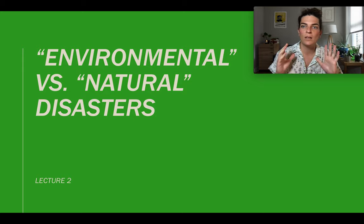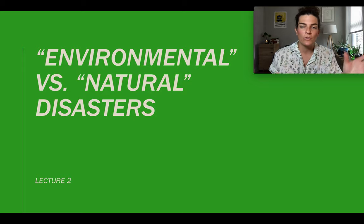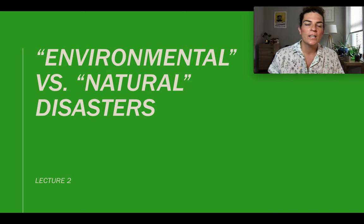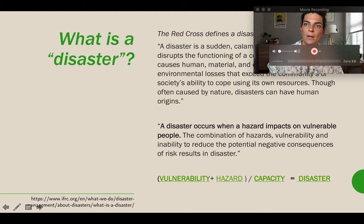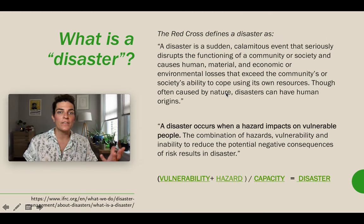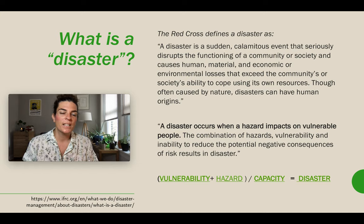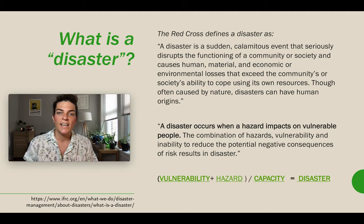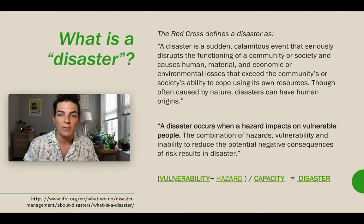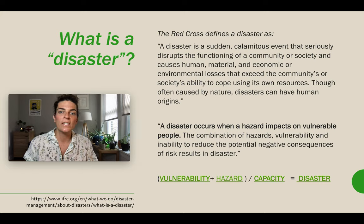This is still day one, but it's lecture two. Lecture one was: what is nature? Lecture two is: environmental versus natural disaster. Before we get to that, we have to start with the definition of a disaster. A disaster is defined by the Red Cross as a sudden calamitous event that seriously disrupts the functioning of a community or society and causes human, material, and economic or environmental losses that exceed the community's or society's ability to cope using its own resources. Though often caused by nature, disasters can have human origins.